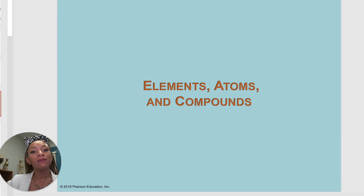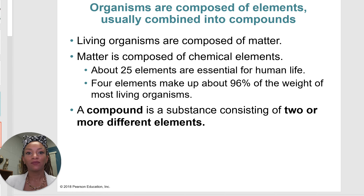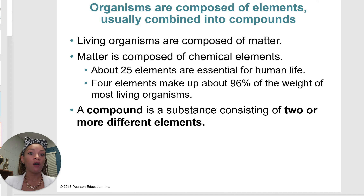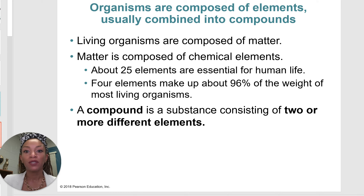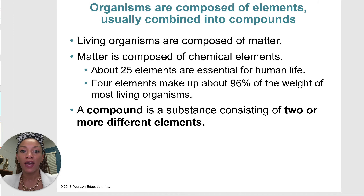Let's talk about elements, atoms, and compounds. Organisms are composed of elements, usually combined into something called compounds. Living organisms are all composed of something called matter, and matter is composed of chemical elements. There are about 25 elements that are essential for human life.